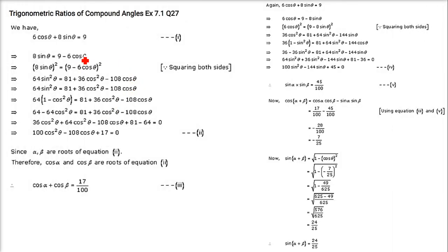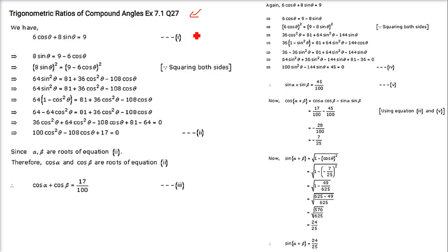Next is 6·cos(θ) + 8·sin(θ) = 9 — this question we are going to take in the next discussion. Thank you so much. Take care of yourself.